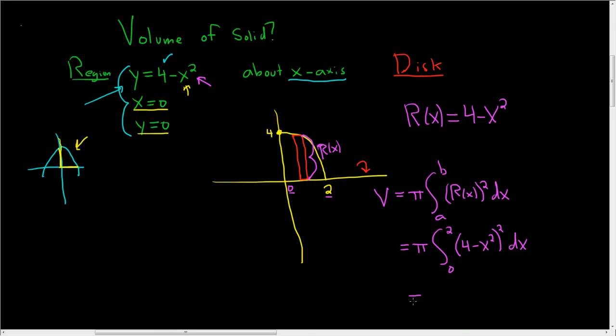And via magic, we end up with 256 pi divided by 15. So there's a lot of missing steps there. But the hard part is coming up with big R and drawing the picture and setting up the integral. So I hope that made sense.